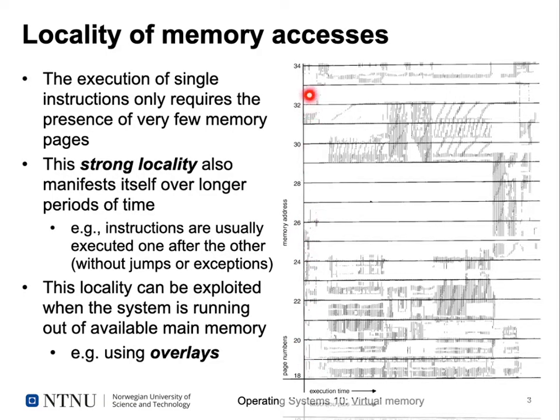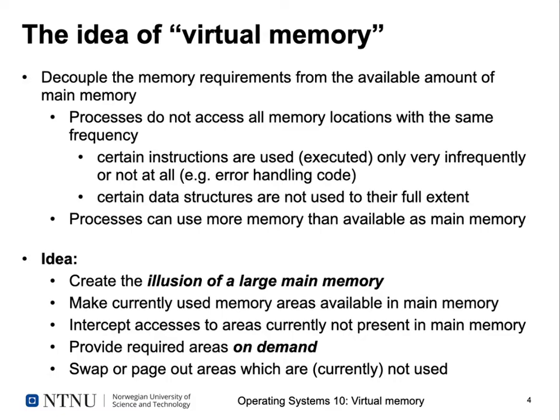We can make use of locality if we ensure that when we have a smaller memory than the full address space, we have exactly the pages in memory that are actually used at each respective time. What we need are methods to figure out which pages are actually required at a certain point in program execution. With virtual memory, we decouple the requirements a process has for its memory address space from the available amount of main memory. Processes do not access all memory locations with the same frequency.